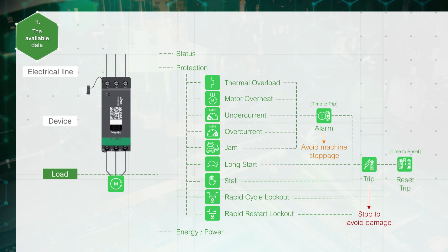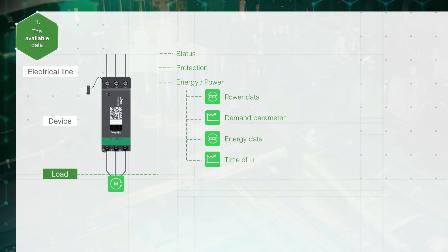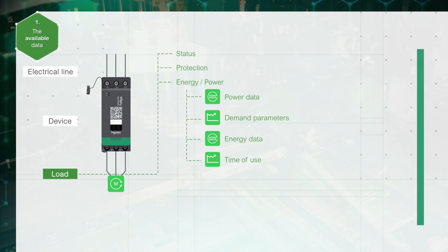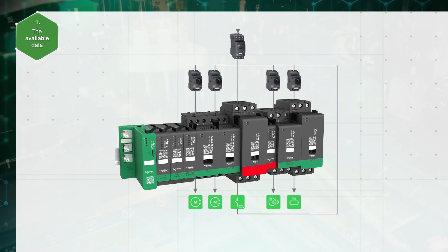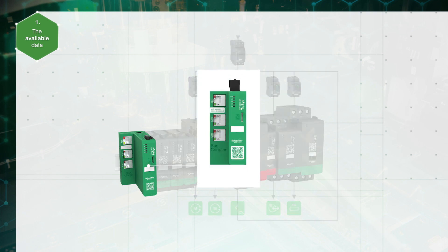If there is no action after an alarm, the device trips to protect the motor. If a voltage interface module is installed in the Tesys Island, power and energy data are available at the load level in order to track or optimize operations and lower energy bills. Let's focus now on system data.